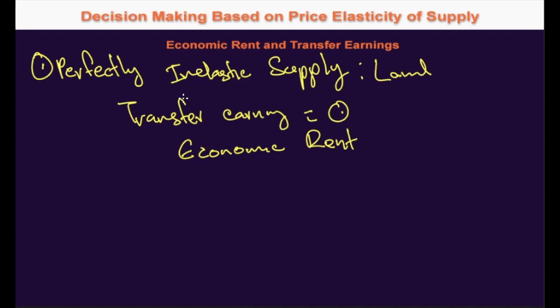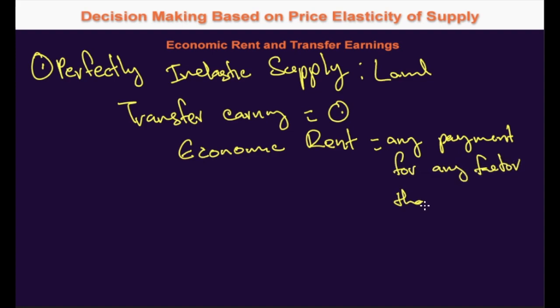Rent as a price for the use of land and rent as surplus earnings of land have often been used interchangeably. Therefore, economic rent has also been defined as a payment for any factor whose supply is perfectly inelastic. Any payment for any factor that is perfectly inelastic is known as economic rent.